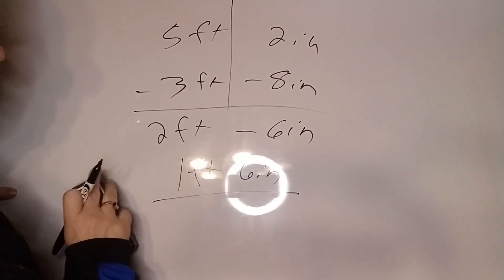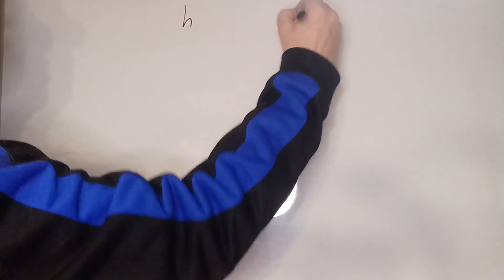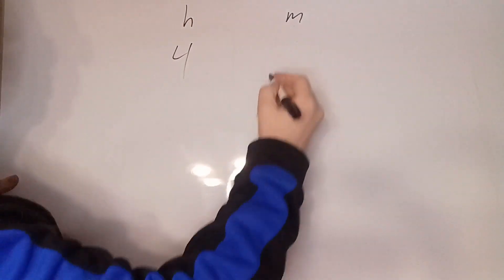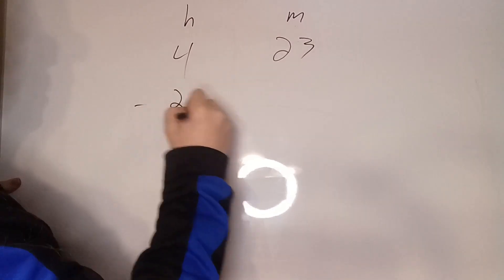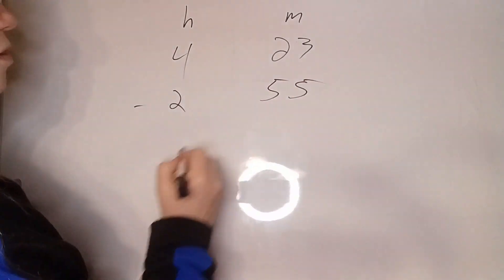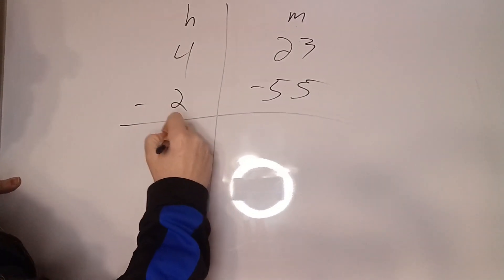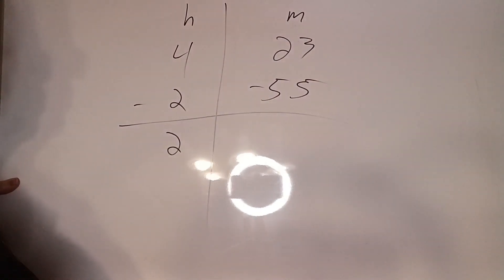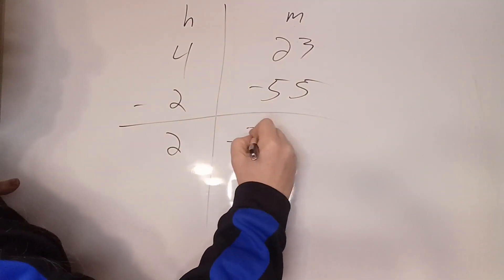Let's do another example. Let's do hours and minutes. Four hours, 23 minutes minus two hours, 55 minutes. So we have two hours.